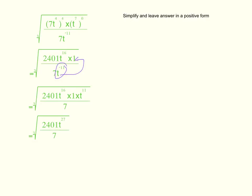If you're wondering how I got t to the power of 27, it's all about the first index law, which states that when multiplying terms with the same base, you add the powers. So t to the power of 16 and t to the power of 11 both have the same base, so we add the powers: 16 plus 11 equals 27. Now type cube root of 2401 over 7 into your calculator and the answer should be 7. Cube root of 27 is 9, so your final answer should be 7, t to the power of 9.